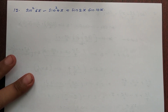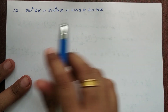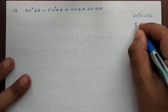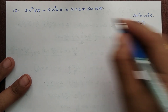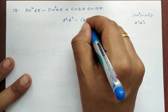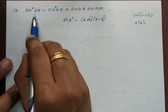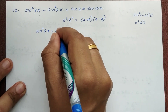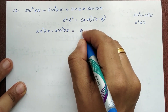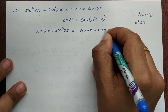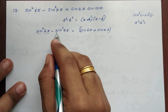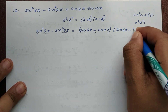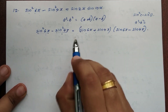Next problem: sin²(6x) - sin²(4x) is equal to sin(10x) · sin(2x). We use the identity sin²c - sin²d, and we write a² - b² = (a + b)(a - b). So sin²(6x) - sin²(4x) = (sin 6x + sin 4x)(sin 6x - sin 4x).